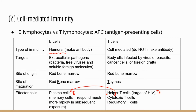Helper T cells act like a director — they tell the workers what to do. The cytotoxic T cells are the actual killer cells. They directly attack cells infected with a parasite or virus, cancer cells, and foreign cells. When we do tissue or organ transplants, we try to suppress the immune response to prevent the body from rejecting foreign tissue — it's the cytotoxic T cells that attack those foreign tissues and organs.